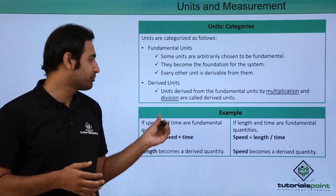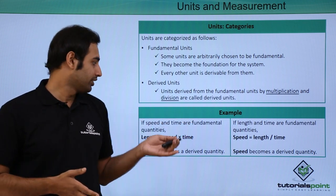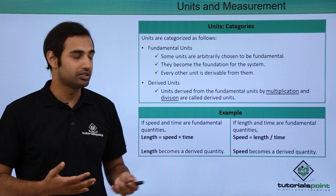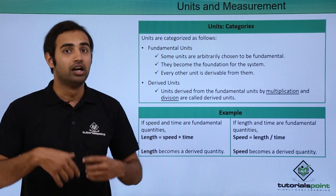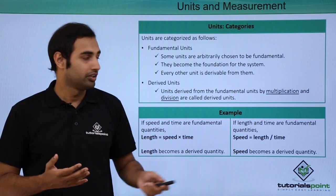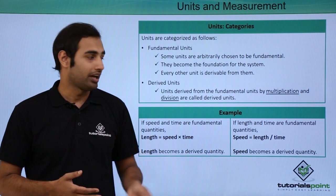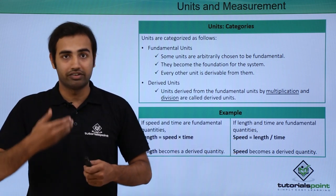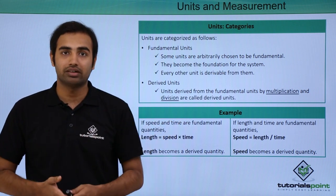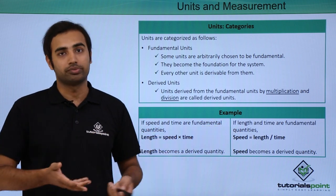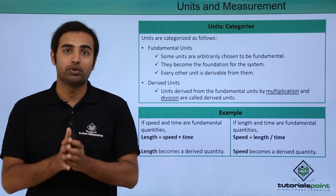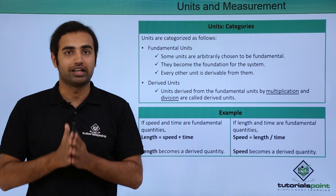If I choose speed and time as my fundamental units, then length becomes a derived unit which can be obtained as speed into time, and its unit will simply be the unit of speed times time. However, if I choose length and time as fundamental units, then speed becomes the derived unit which is length upon time. So my choice of the fundamental unit is clearly arbitrary, but once I have chosen it, every other unit can essentially be derived from it.